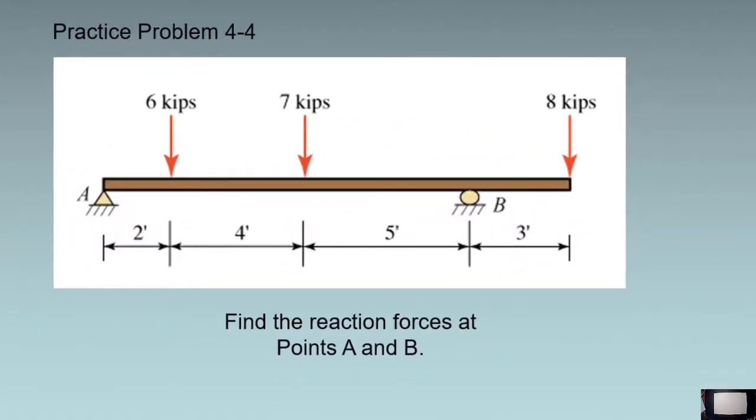For practice problem 4-4, we have a beam with a pinned support at point A and a roller support at point B. There are three forces applied to the beam as shown. Our job is to find the forces that are holding up the beam at point A and point B.